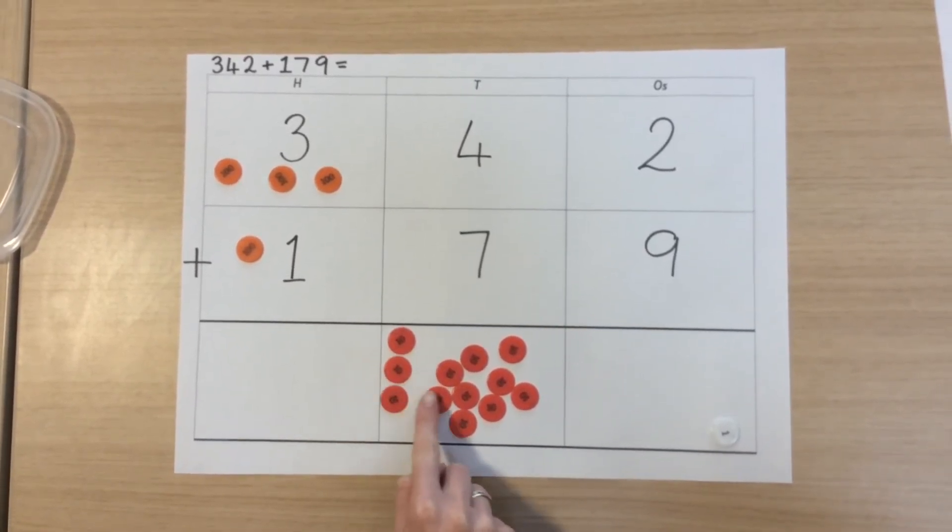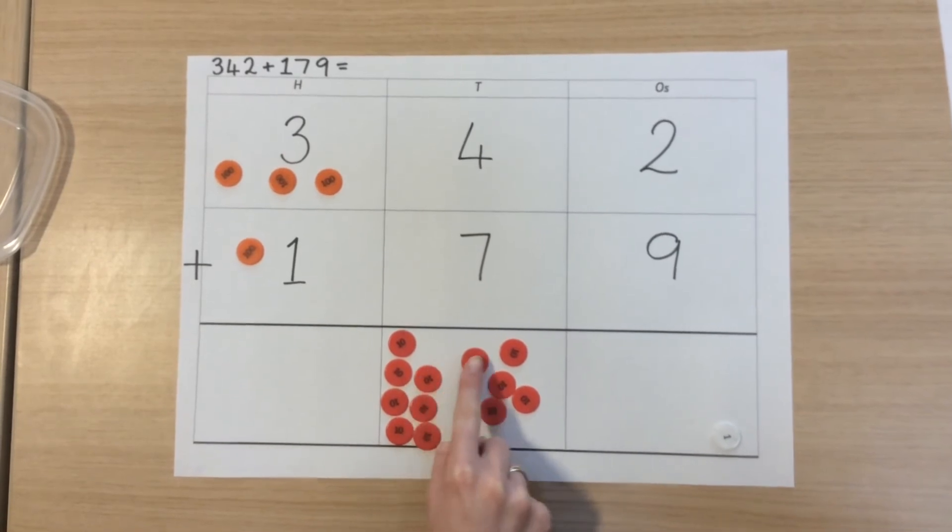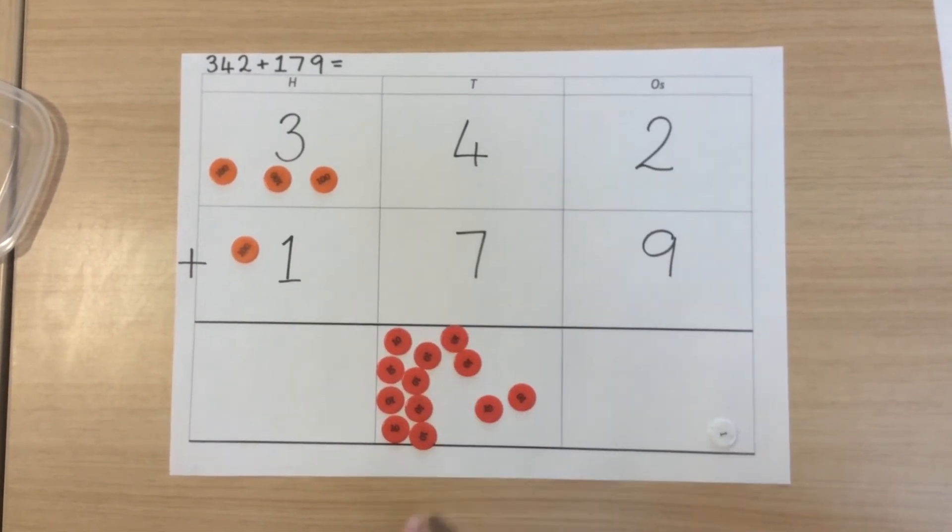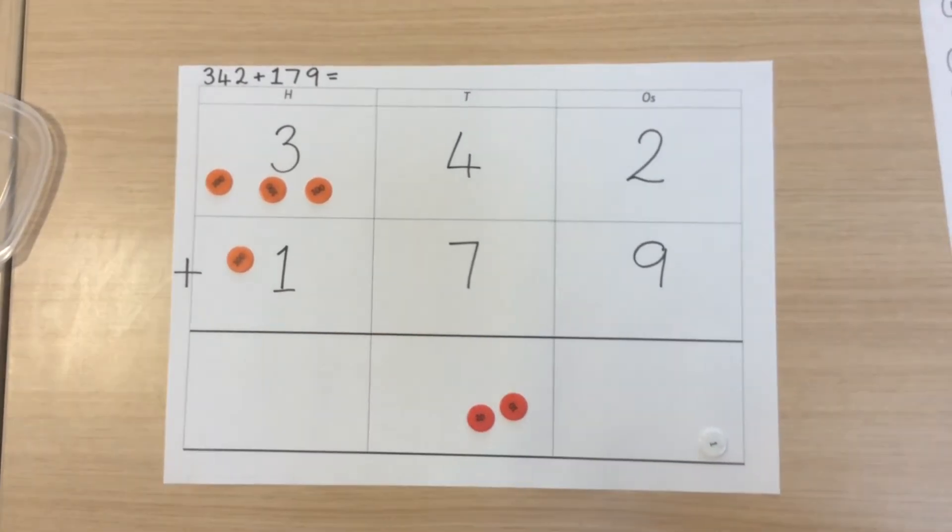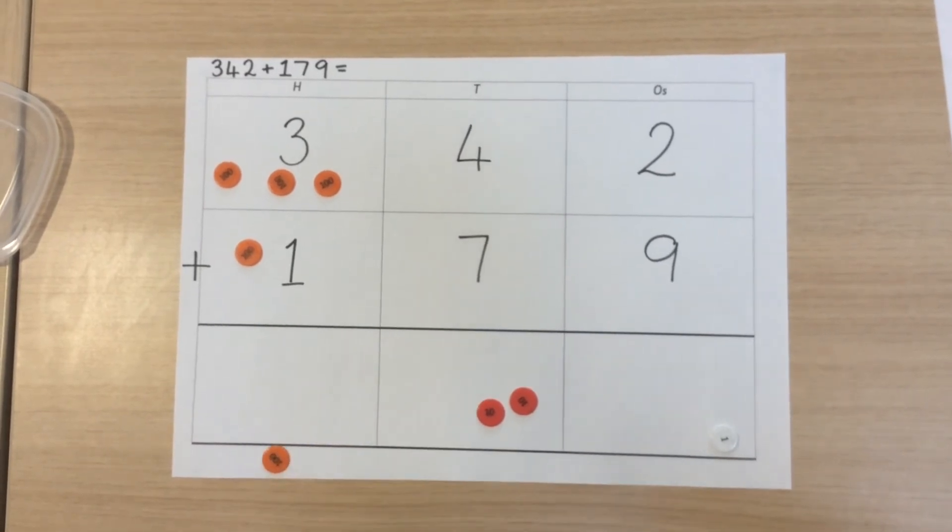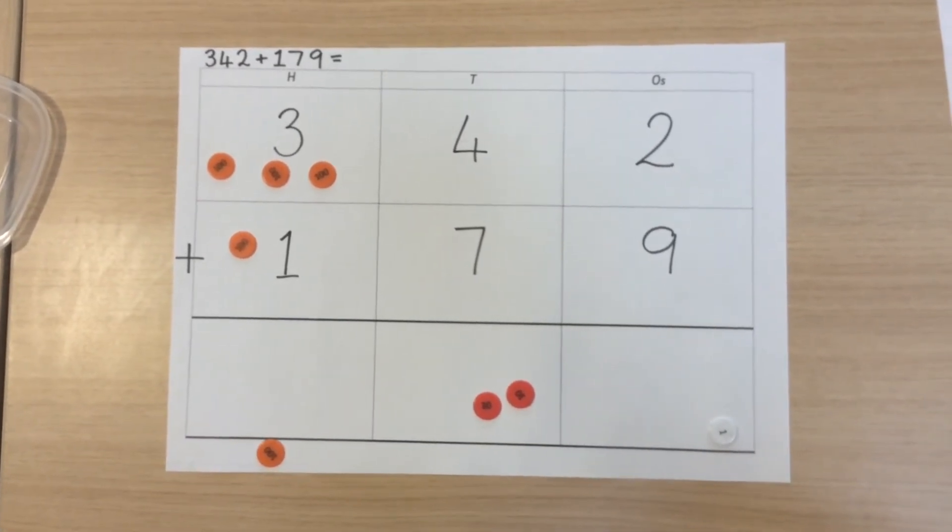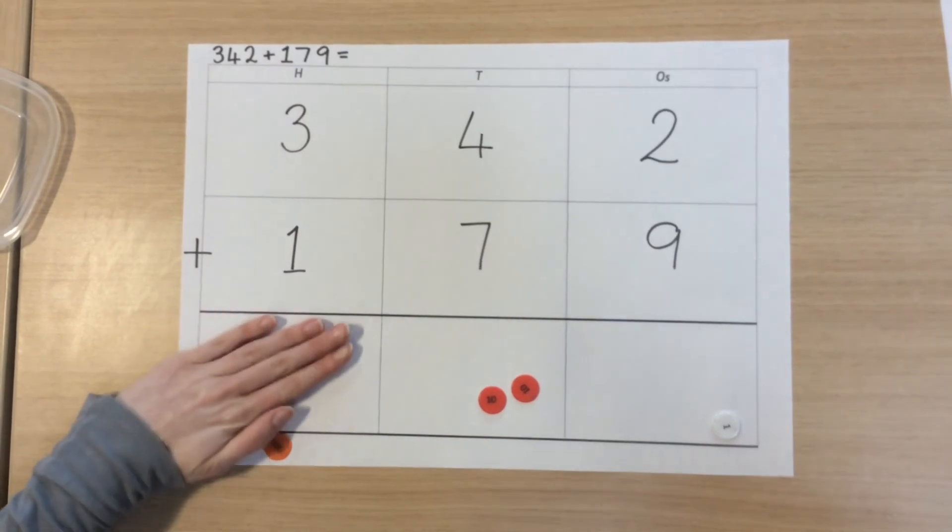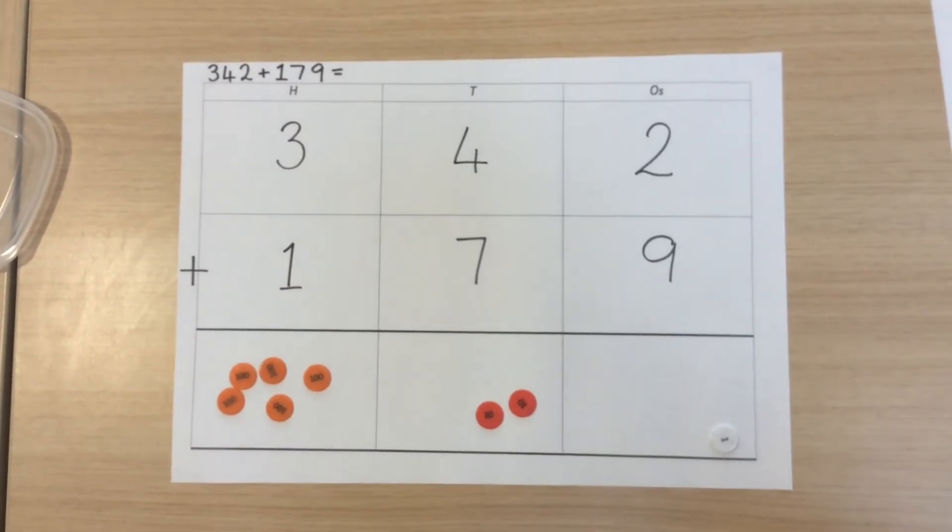We then can group the numbers into our first group of ten and exchange this group of ten tens for one hundred. We can then continue the same process in our hundreds column. So three plus one plus our exchange of one gives us five.